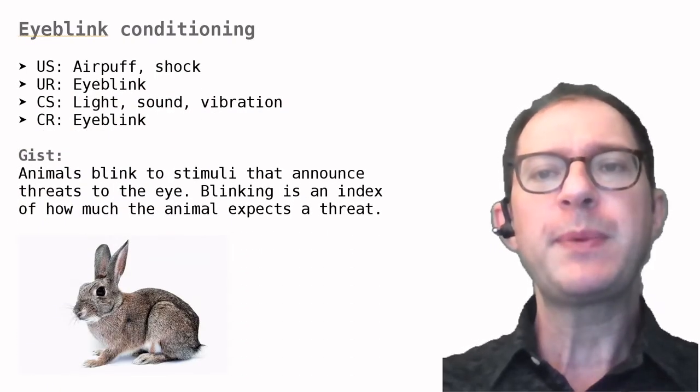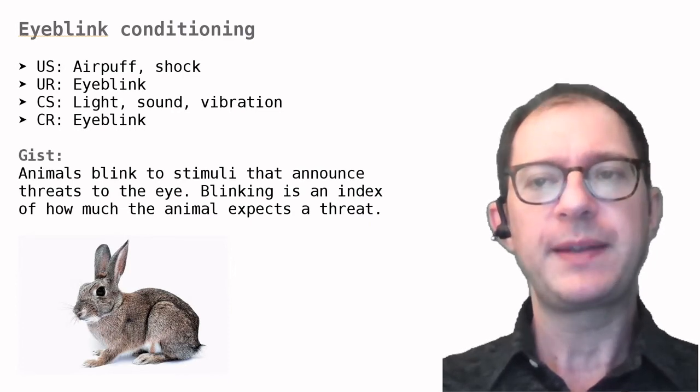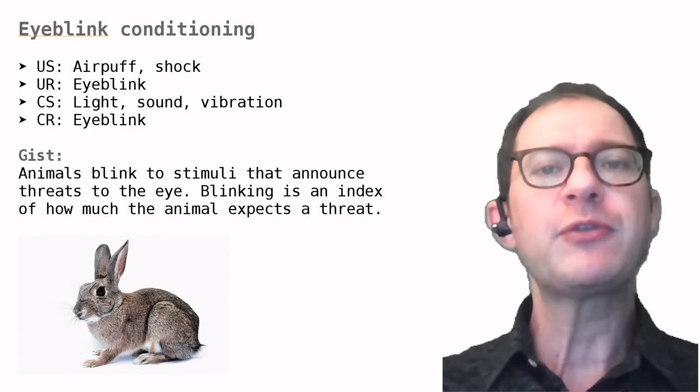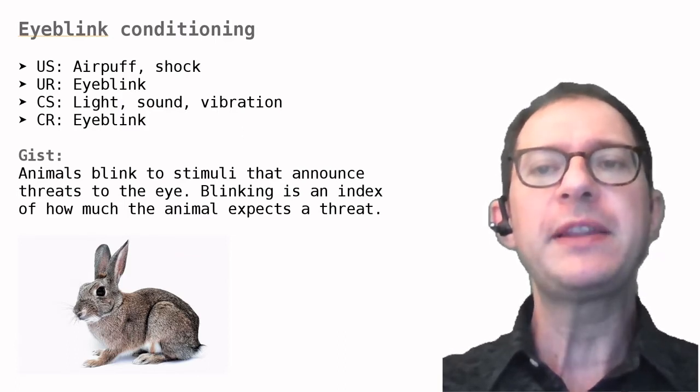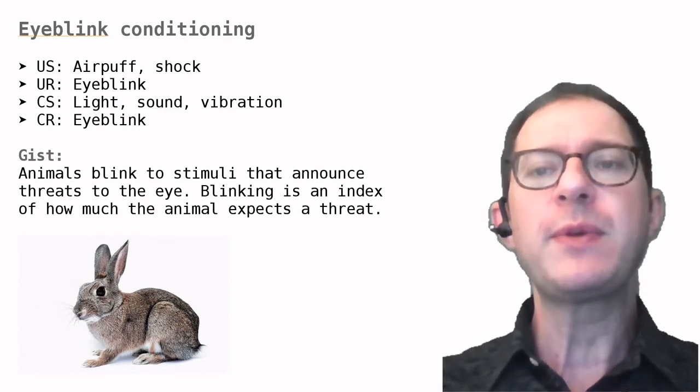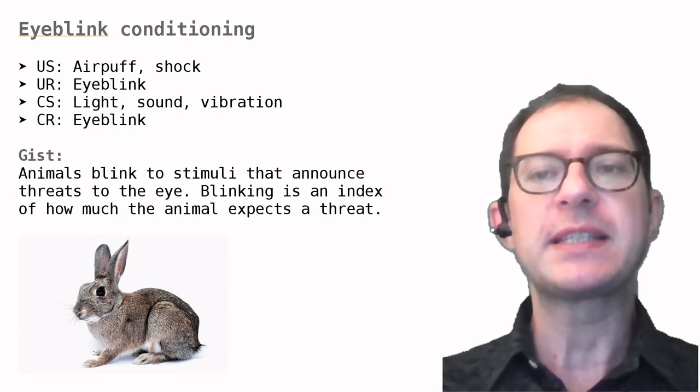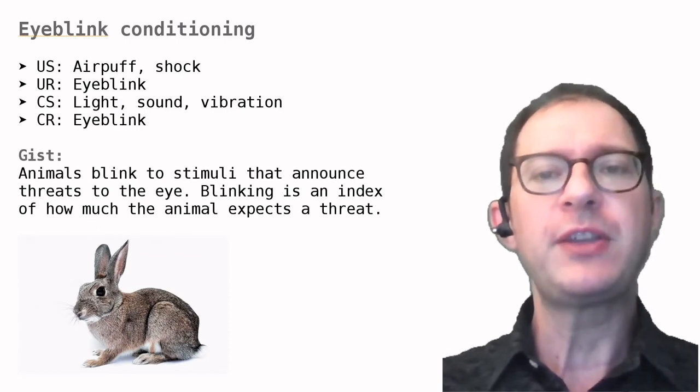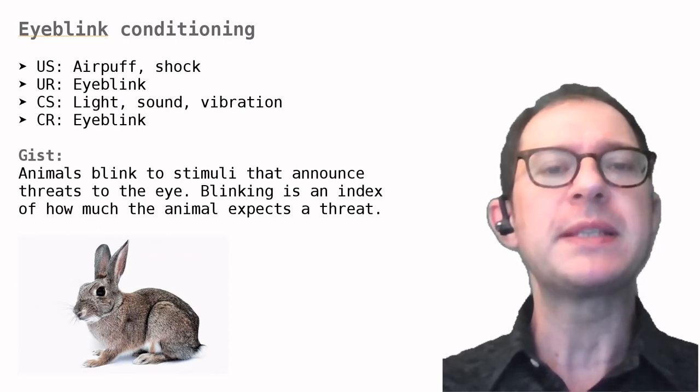The next Pavlovian preparation is eye blink conditioning. It should be pretty easy to understand by now. The US is something that naturally causes an eye blink, like an air puff or a mild electric shock delivered to the side of the eye. When this US is preceded by a CS, the animal learns to blink to the CS too. Eye blink conditioning is most often used with rabbits and humans.